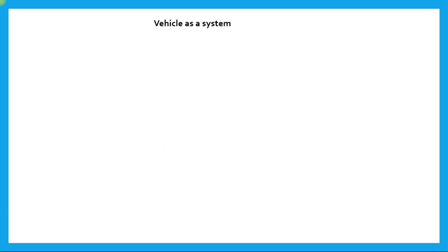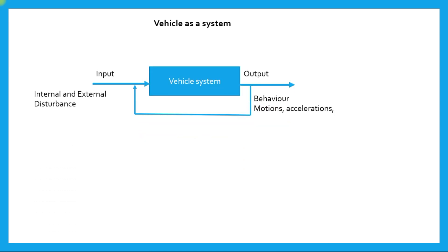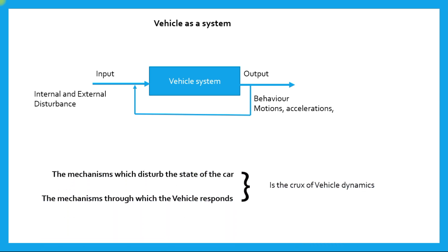If we treat the vehicle as a system, the input will be the disturbance — internal or external — and the output will be the end behavior of the vehicle, expressed in motions or accelerations. Both of these are connected, similar to a control system: the output gives feedback and the input to the vehicle system also changes accordingly.